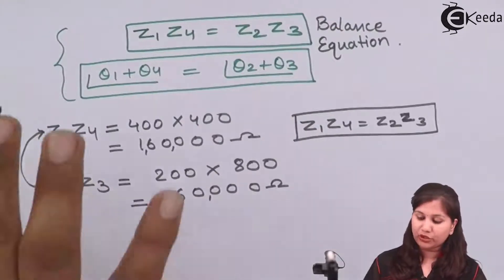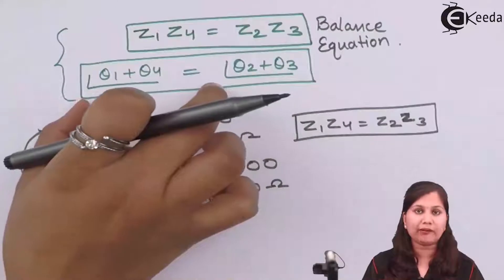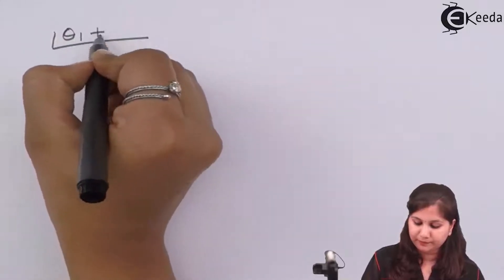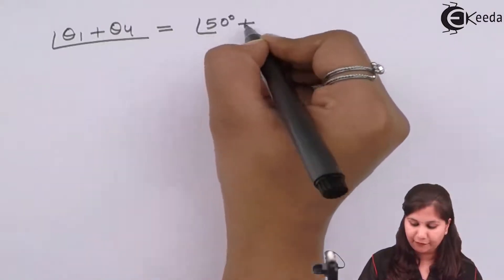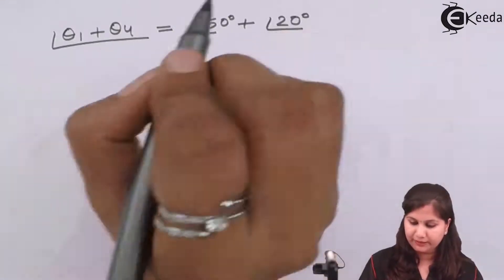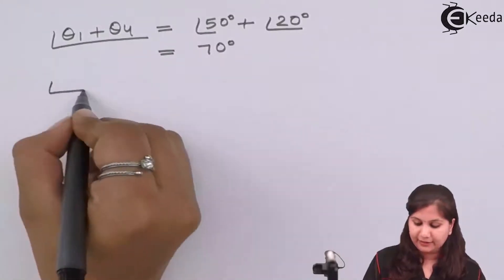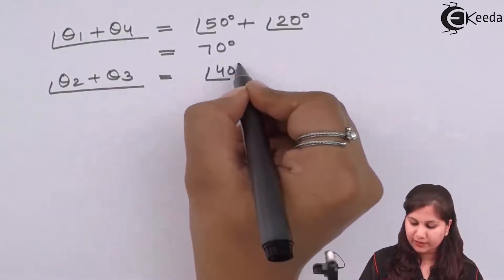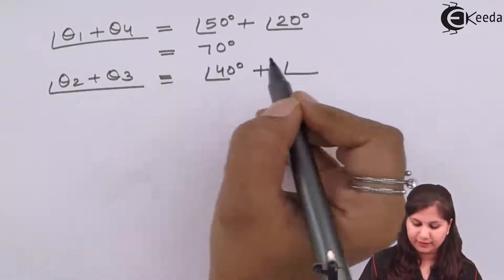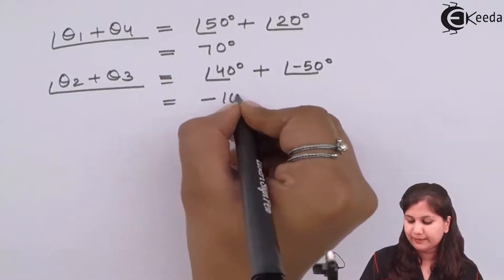Now we have to check the second equation as well, because both equations must be satisfied for the bridge to be balanced. Theta1 plus theta4: theta1 is 50 degrees and theta4 is 20 degrees, giving 70 degrees. Theta2 plus theta3: theta2 is 40 degrees and theta3 is minus 50 degrees, giving minus 10 degrees.